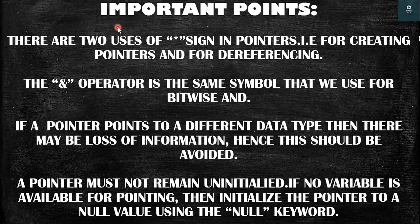Some important points: The star sign is used for both creating a pointer and for dereferencing — those are its two uses. The AND operator is also called the address-of sign, and it is the same symbol used for bitwise AND. A pointer should always point to the same data type — an integer pointer to an integer variable, a float pointer to a float variable. Finally, a pointer must always be initialized and should not be left uninitialized. If there is no value to assign, then assign null to the pointer using the null keyword.